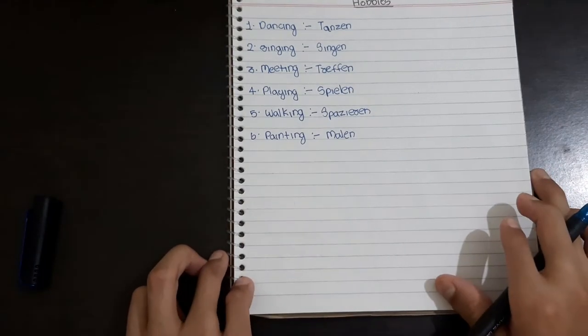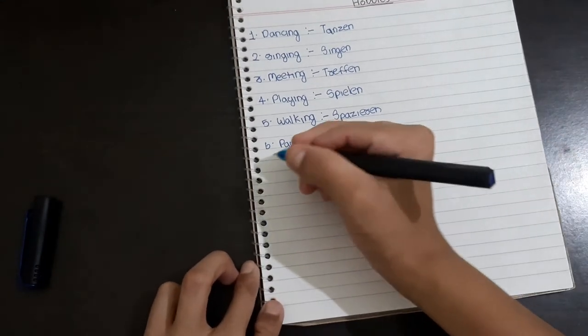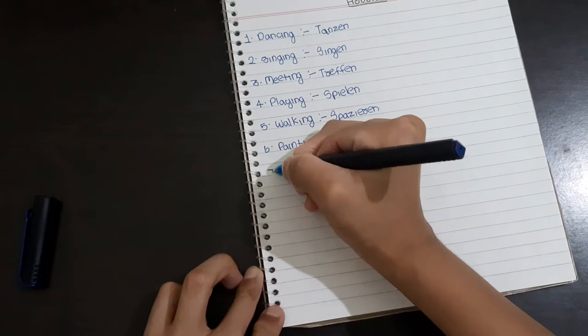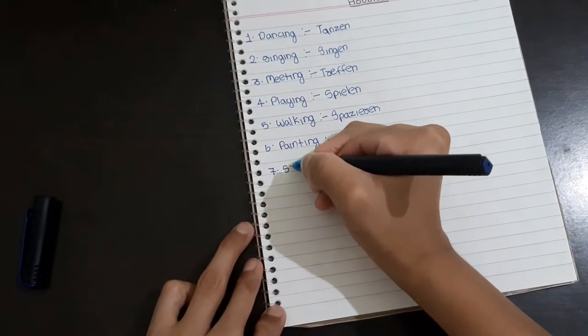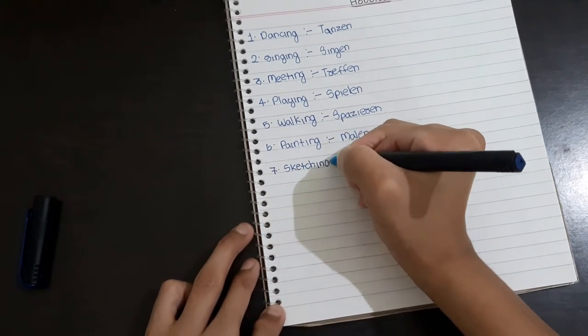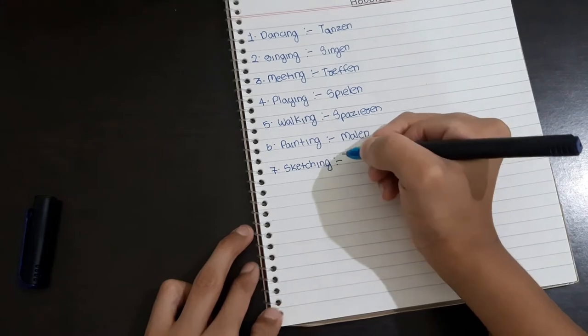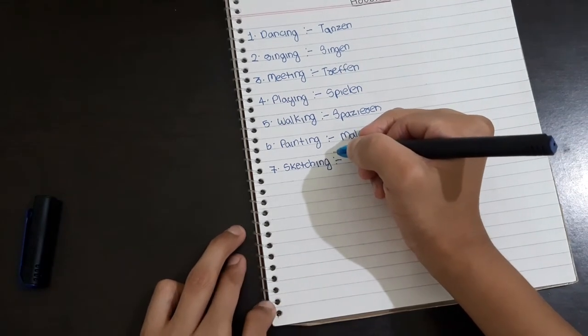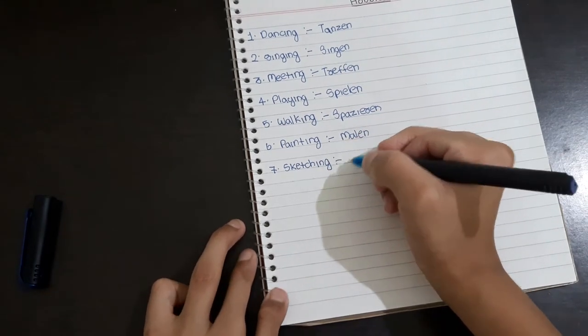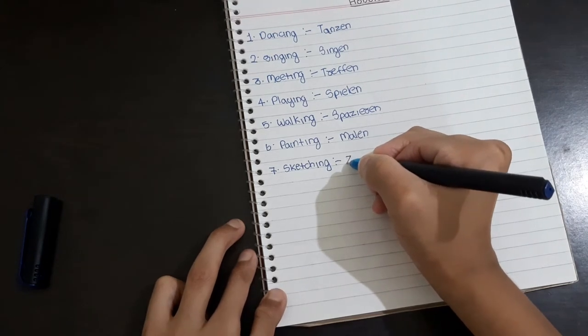The seventh one is sketching. Sketching means Zeichnen, Z-E-I-C-H-N-E-N.